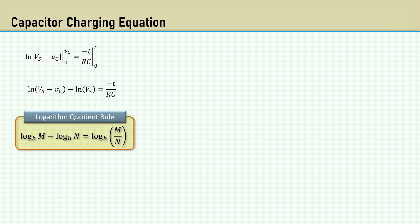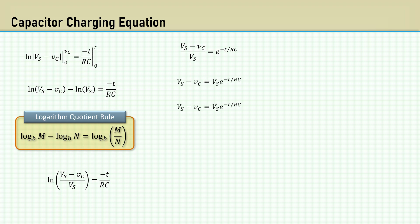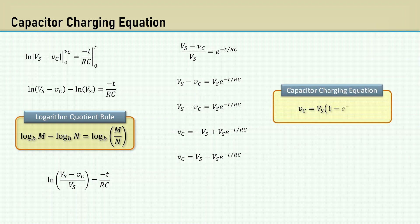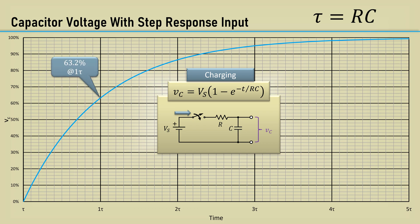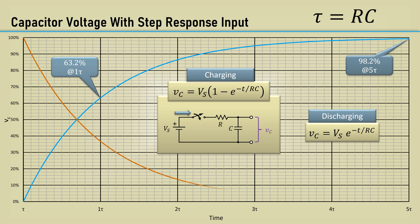Integrating from 0 to VC gives us this. We can then apply the logarithm quotient rule for the subtracted log terms and get this. Then e to the x of each side. Then I'll rearrange to solve for VC, and then factor out VS. And here's the capacitor charging equation. Tau, the time constant, is equal to RC. When the switch is closed, the capacitor charges as a function of time. At one time constant, the voltage across the capacitor charges to 63.2%. At five time constants, the capacitor charges to 98.2%. We could go through the calculus to derive the formula for the capacitor discharging, but it's simply the opposite with the one minus removed.